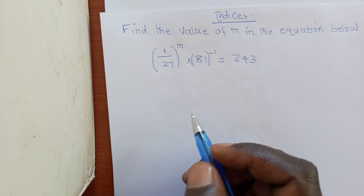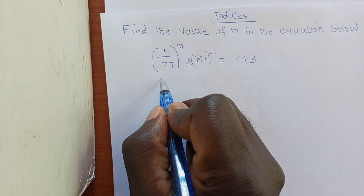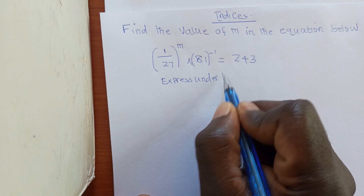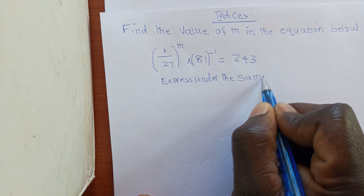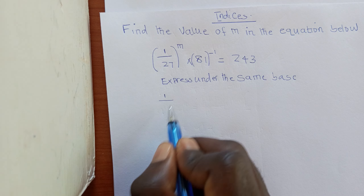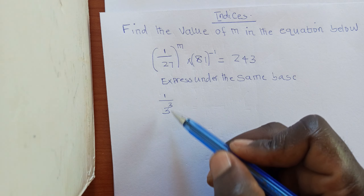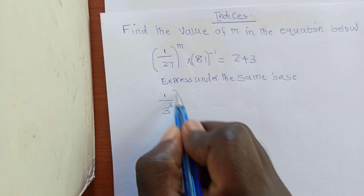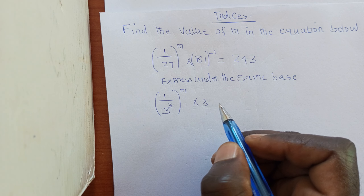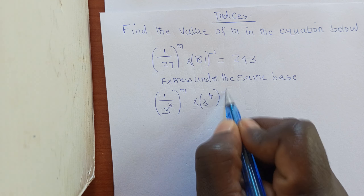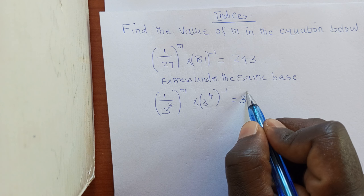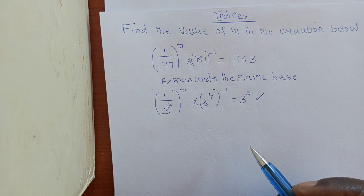Back to our question. The first step is to express all terms under the same base. We write 1 over 27 as 1 over 3 raised to 3, since 3 cubed equals 27. Then 81 is 3 raised to 4. This is raised to negative 1. And 243 equals 3 raised to 5. We have now expressed everything under the same base.